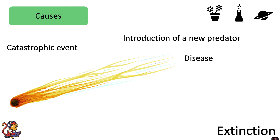Disease is another factor that can cause extinctions, and this might occur naturally or it could again be due to human activity and our interactions with animals or plant organisms.